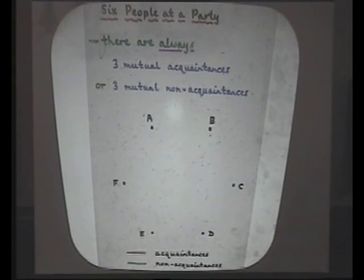We take this picture here. And what I'm going to do is whenever... So I've got the six people here. And whenever they know each other, I'm going to join them by a red line. And when they don't know each other, I'm going to join them by a green line.